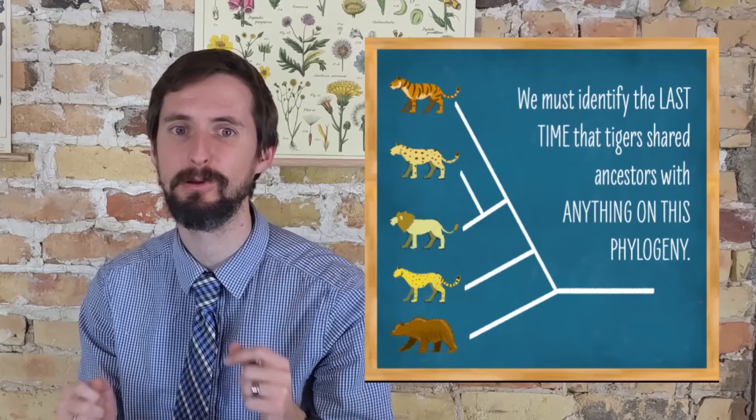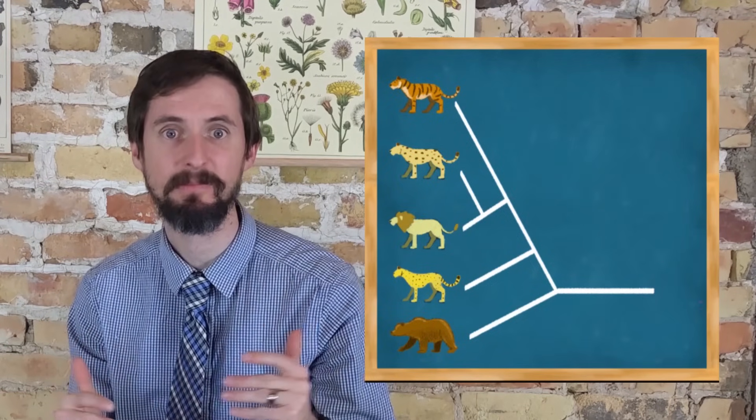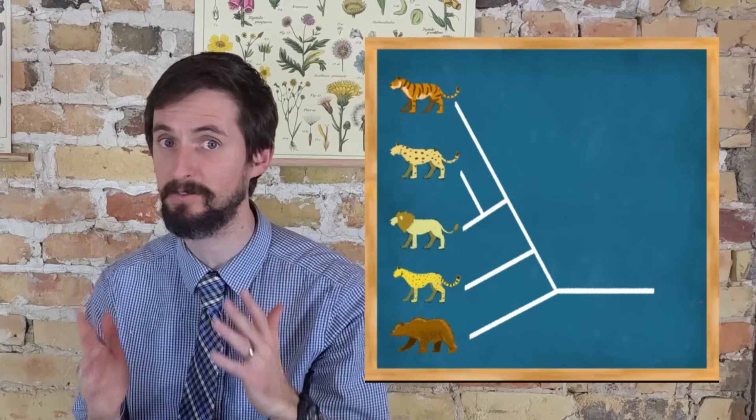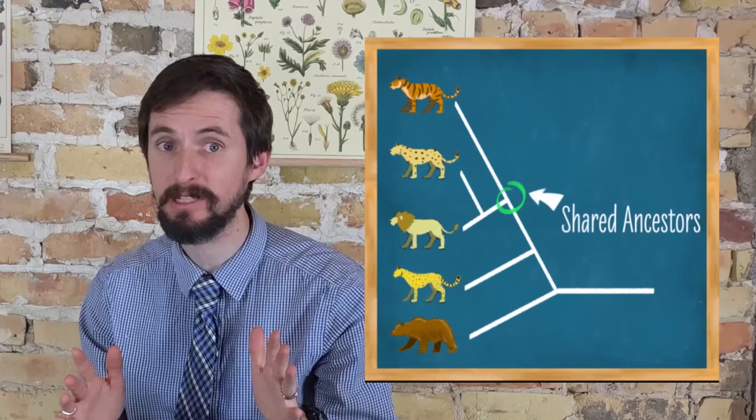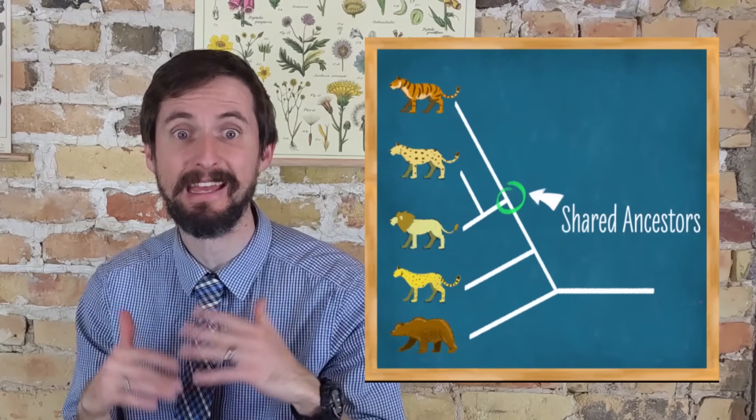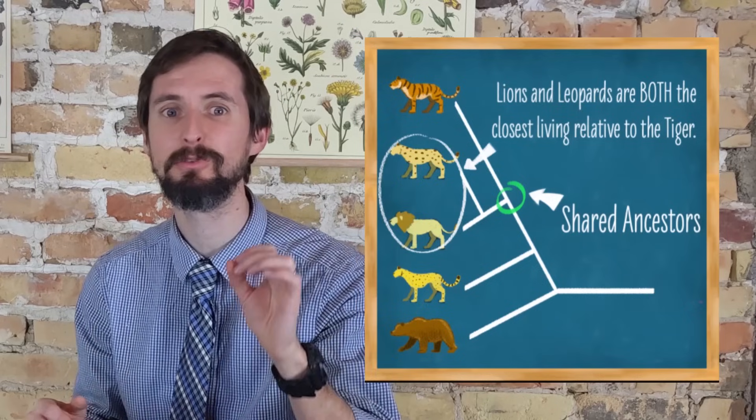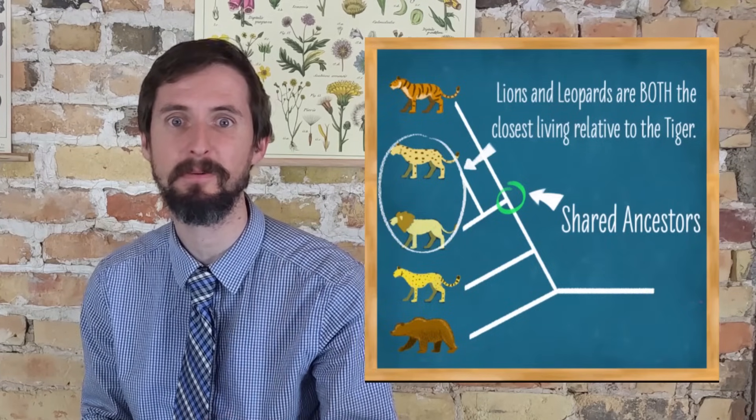And the closest living relatives to the tiger, in this case, the last time that tigers share ancestors with any other living organisms on this phylogeny, was at this node. It shared those ancestors with both lions and leopards. Therefore, lions and leopards are both the closest living relatives to the tiger.